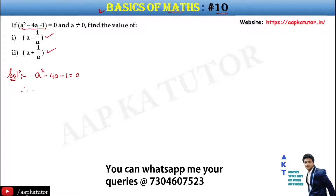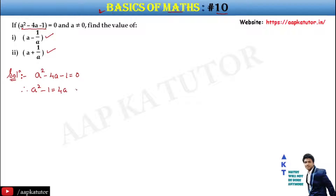From the given equation, we get a squared minus 1 equal to 4a. Let's take this as equation number 1.